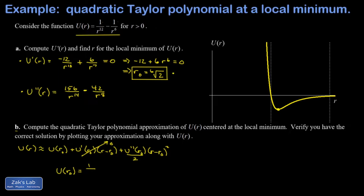Computing u(r₀): we have 1/r₀^12 − 1/r₀^6, where r₀ = 2^(1/6). Writing r₀ as a fractional exponent, the first term becomes 1/(2^(1/6))^12 = 1/2² = 1/4. The second term gives 1/(2^(1/6))^6 = 1/2, so we get 1/4 − 1/2 = −1/4. Therefore u(r₀) = −1/4.